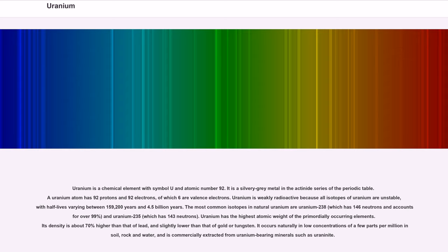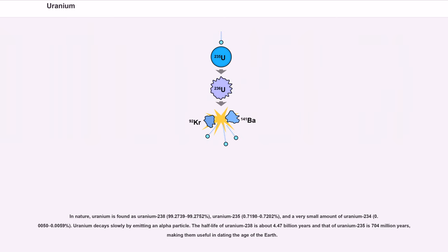Uranium has the highest atomic weight of the primordially occurring elements. Its density is about 70% higher than that of lead and slightly lower than that of gold or tungsten. Uranium decays slowly by emitting an alpha particle, making isotopes useful in dating the age of the Earth.